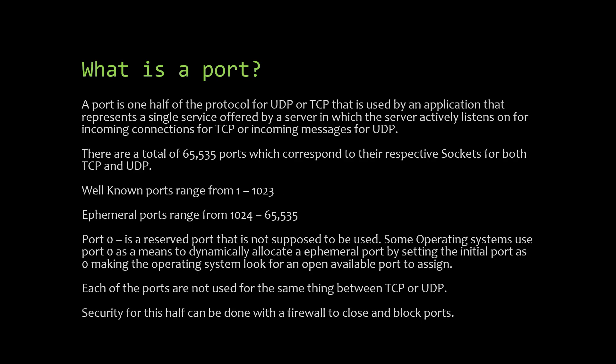So what is a port? A port is one half of a protocol for UDP or TCP, used by an application that represents a single service offered by a server, which actively listens on it for incoming connections. There are a total of 65,535 ports corresponding to their respective sockets for both TCP and UDP. Well-known ports range from 1 to 1,023; ephemeral ports range from 1,024 to 65,535. Port 0 is a reserved port not supposed to be used, though some operating systems use it to dynamically allocate ephemeral ports.